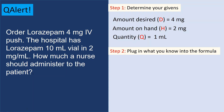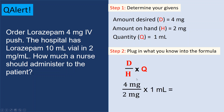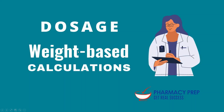Step two: plug into the formula — Desired over Have times Quantity. Dose is 4 milligrams, drug on hand is 2 milligrams, and quantity is 1 mL. Cancel out milligrams and milligrams, and you get 2 mLs. So to get 4 milligrams IV push, you draw 2 mLs from the 10 mL vial.